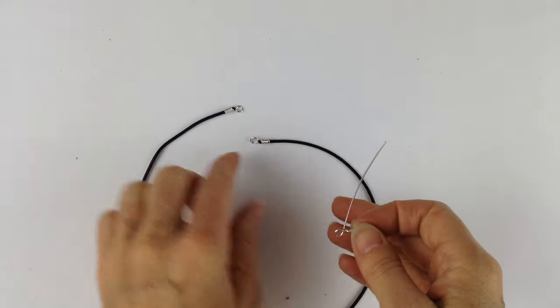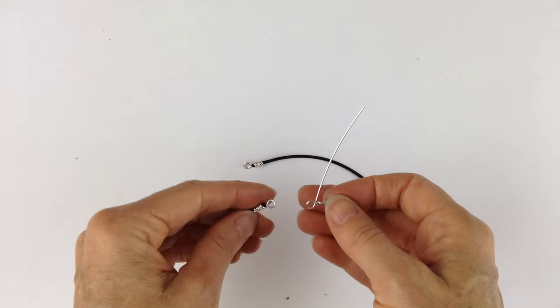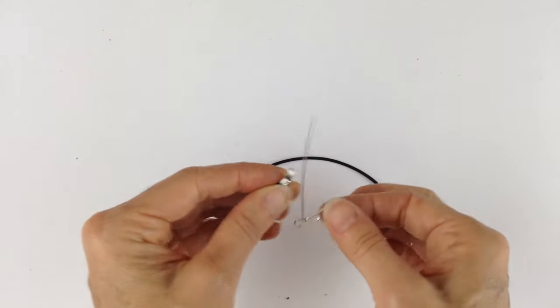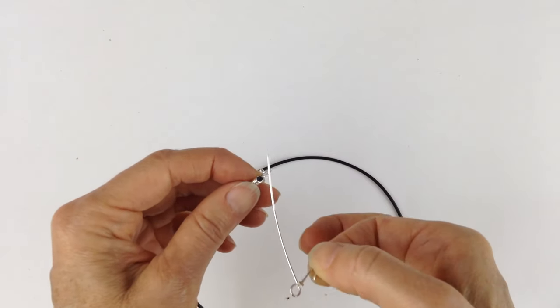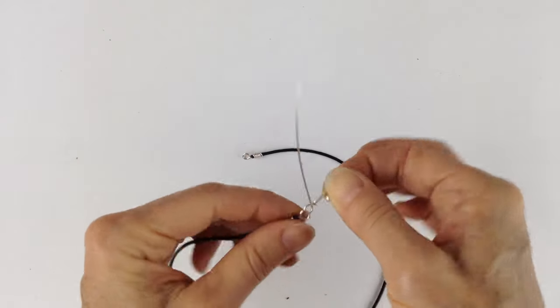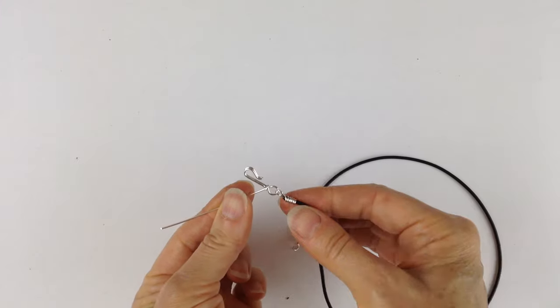So once you have both loops done, you're going to choose which end you want to put the hook on. You're going to take your hook that you've already made and loop it onto there.